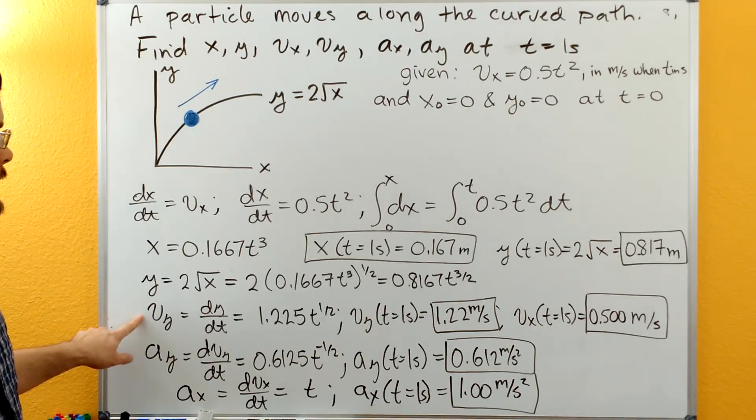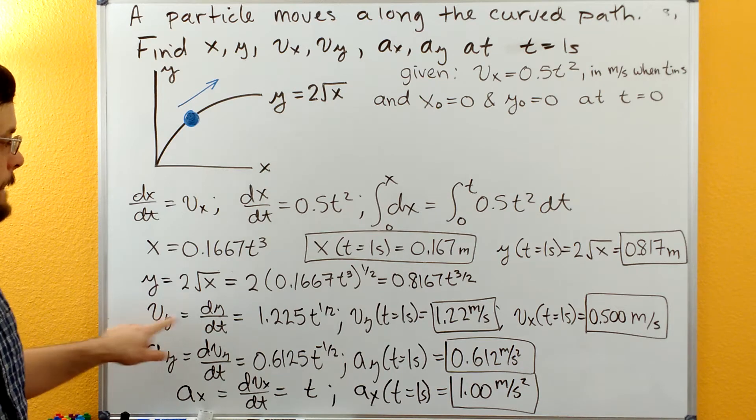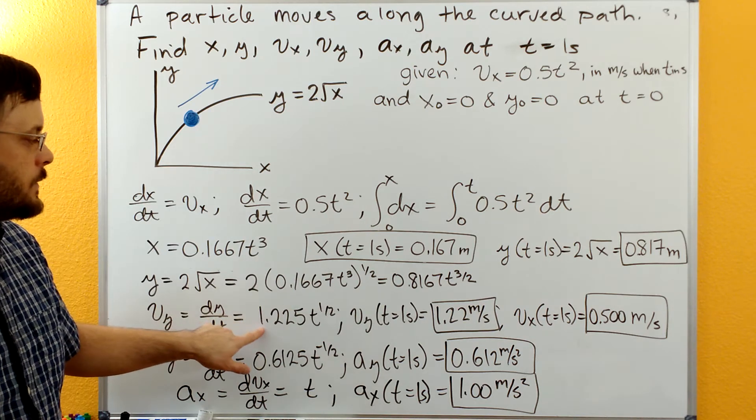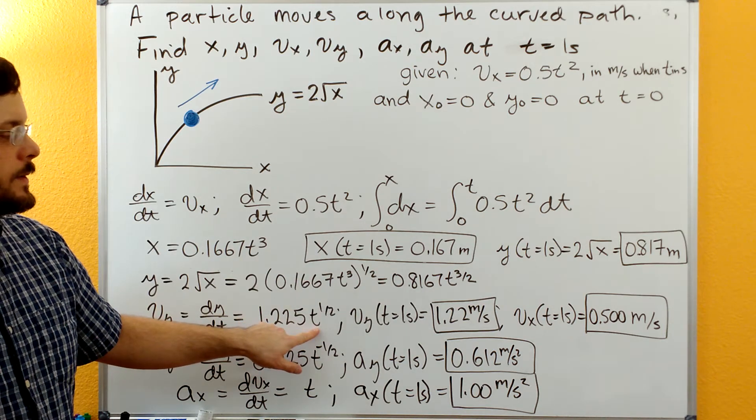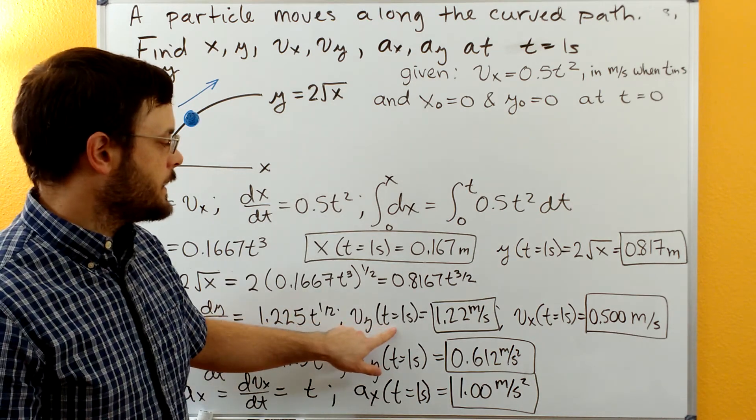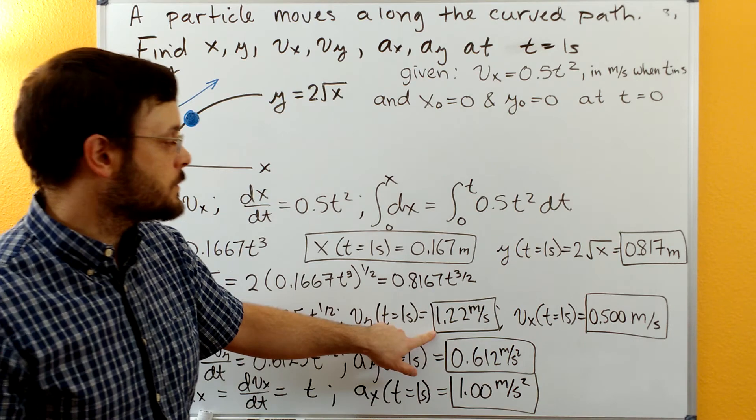Then we can go back and take a derivative of that y with respect to t. And so when we do that, we'll get 3 halves multiplied by this coefficient, so 1.225 times t to the 1 half. We can now plug in t equals one second. We get vy is 1.22 meters per second.